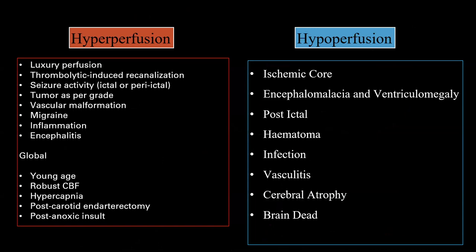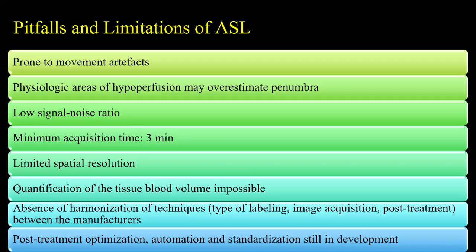To conclude, we will go through a summary list of hyperperfusion and hypoperfusion states where ASL — a novel non-contrast perfusion technique — can be applied. Hyperperfusion is seen in: luxury perfusion, thrombolytic-induced recanalization, postictal changes, high-grade tumor, vascular malformation, migraine, inflammation, and viral encephalitis. Hypoperfusion is seen in: ischemic core, encephalomalacia, postictal status, hematomas, non-viral infections, vasculitis, demyelination, atrophy, and brain death.